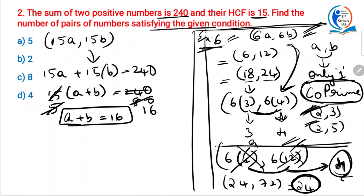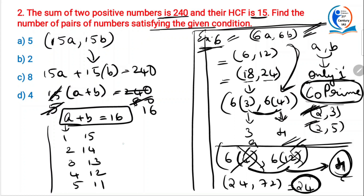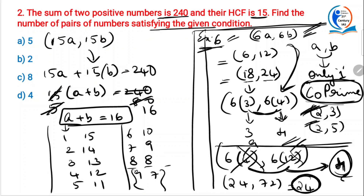After A=8, B=8, the pairs repeat. So you do not need to write beyond this. Now, these are all possible values of A plus B, but there is one more condition: HCF must be 15 and nothing else. The co-prime concept must be applied here — you must eliminate pairs where A and B share a common factor other than 1.